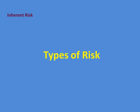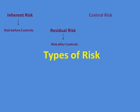Let us discuss various types of risk. The first and very important one is inherent risk. Inherent risk is basically risk before controls — we call it gross risk. Then we have residual risk, which is the risk after controls. We take inherent risk, apply the controls, and what we get is residual risk.